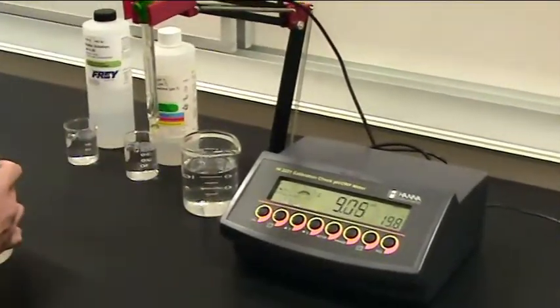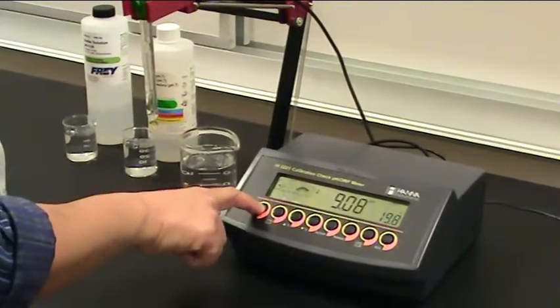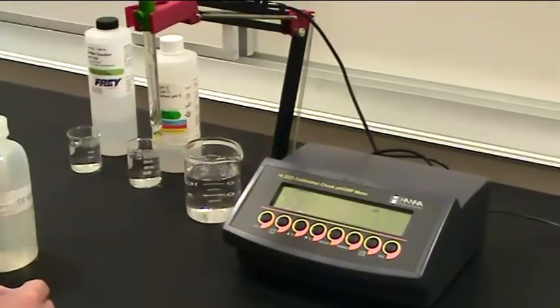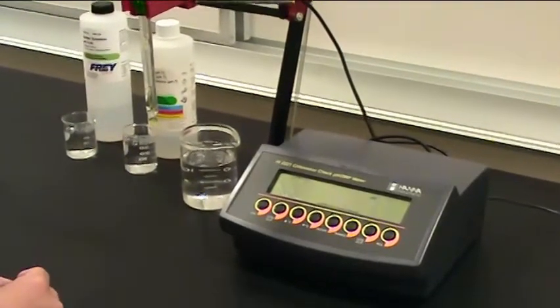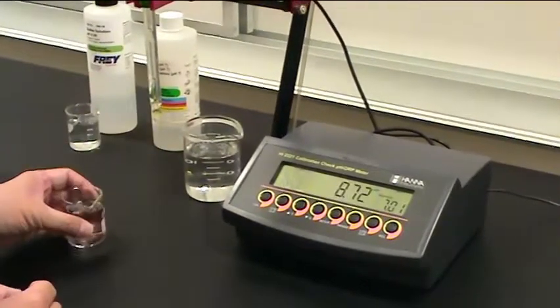And then we're going to begin by pushing the calibration button on the machine. After pushing calibration, you'll see the machine will blink for just a few moments, and then it will tell you which pH buffer you should use.